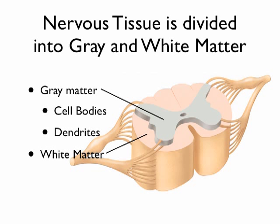Here are the details of why gray is gray and white is white, structurally. Whenever I see gray matter in the central nervous system, I know I'm looking at cell bodies and dendrites of various neurons. Cell bodies and dendrites make up what we call gray matter. So what's the other part of the neuron that makes up white matter? The axons. White matter is the axons.